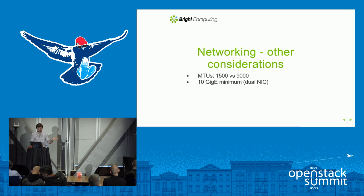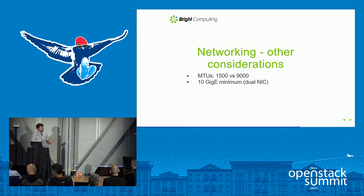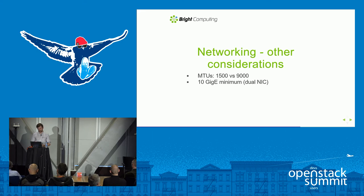Many people recommend going with 9K MTU rather than 1500. We did some benchmarks and didn't see a huge difference, which probably points to under-utilizing Ceph somewhere else. But the overall consensus is that 9K MTU is definitely better, and 10 GbE as a minimum for those fabrics.